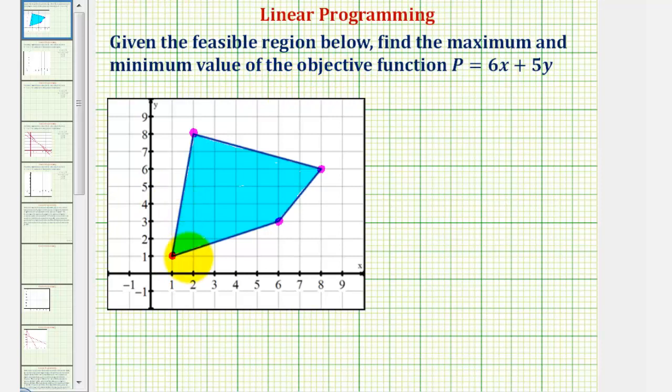Notice how this vertex has coordinates (1, 1), here we have coordinates (6, 3), here we have coordinates (8, 6), and here we have coordinates (2, 8).